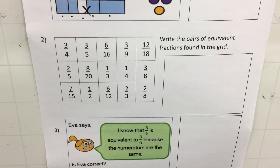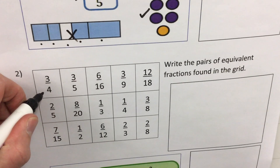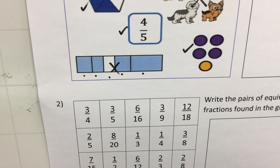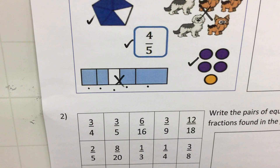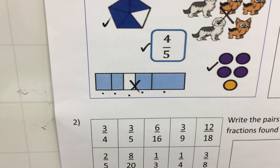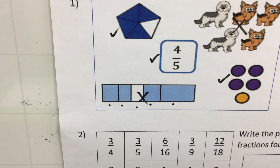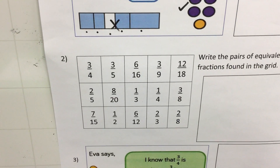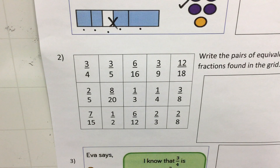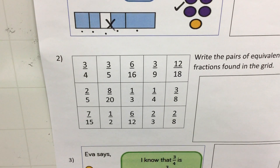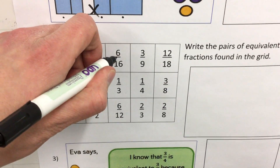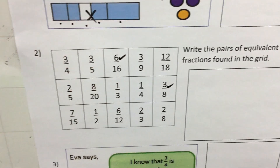Next — pairs of equivalent fractions found in the grid. The first fraction is three quarters. Can we find one that is the same as three quarters? Remember, we have to do the same to the top as we do to the bottom. There is not an equivalent fraction for three quarters in the grid. What about three fifths? There isn't one either. Six sixteenths — both six and sixteen can be divided by two, giving three eighths.